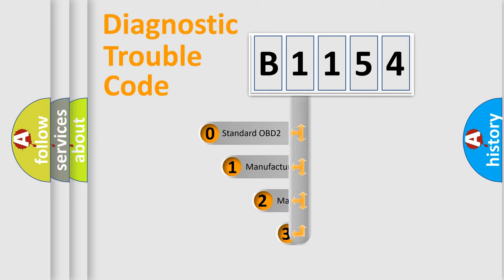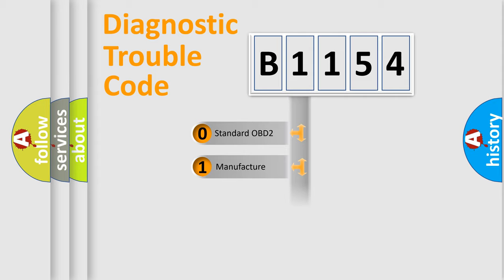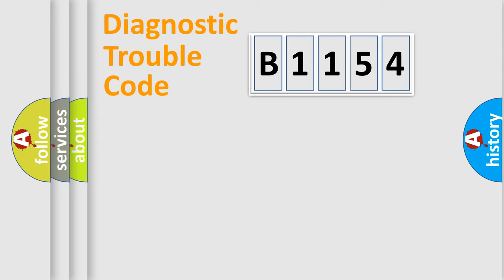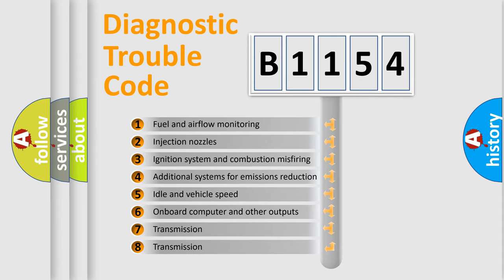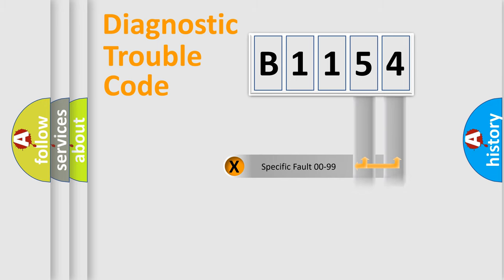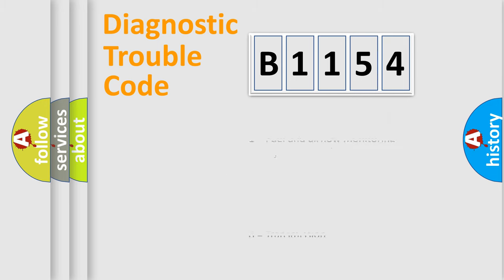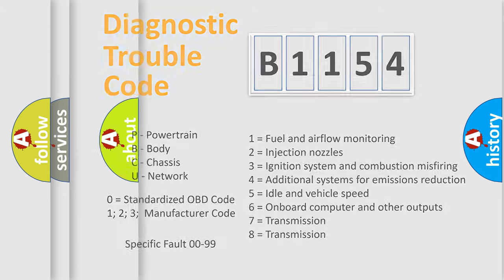This distribution is defined in the first character of the code. If the second character is expressed as zero, it is a standardized error. In the case of numbers 1, 2, or 3, it is a more manufacturer-specific expression of the error. The third character specifies a subset of errors. Only the last two characters define the specific fault of the group. This division is valid only if the second character is expressed by the number zero.